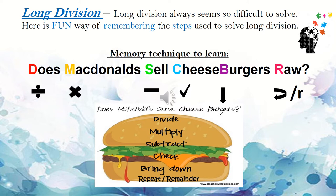Now the first alphabet of every word is going to represent an operation, something that we need to do, a step that we need to do. Now we can see D, M, S, C, B, R. That is 6 alphabets. That means there are 6 steps to long division. So the D stands for divide and the M multiply. The S, subtract. The C, check. The B, bring down. And the R, repeat or remainder.